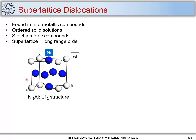This intermetallic compound forms at certain compositions of nickel and aluminum and thus these are called stoichiometric compounds. You need three atoms of nickel and one atom of aluminum to form this crystal structure, which is Ni3Al.